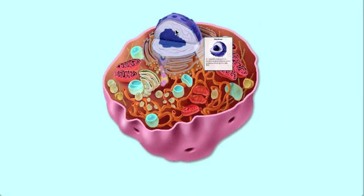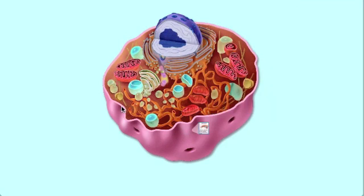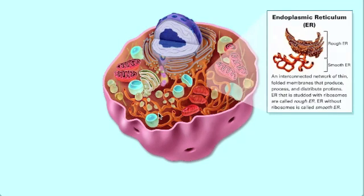Animal cell. As you can see, it has a nucleus in it. The nucleolus is a dense region in the nucleus where ribosomes are assembled.